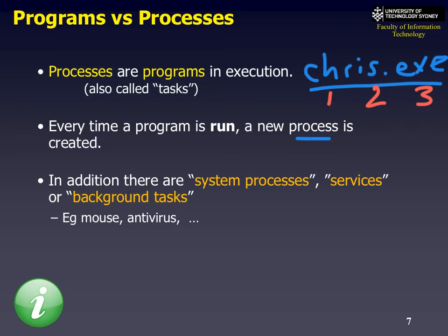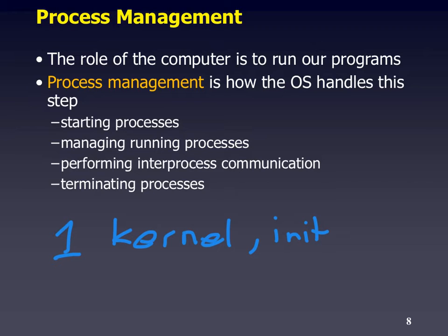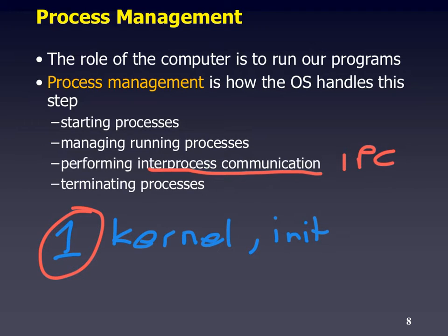There are also system processes — for example, things that control the mouse, the antivirus, or the network interface. The job of an operating system is to manage these processes. There's usually one main process when the system initially starts, called the kernel — sometimes called init or something else, often called process number one. The OS starts processes, manages running processes, performs inter-process communication (IPC), and kills processes as well.